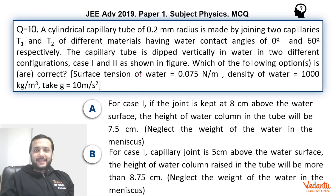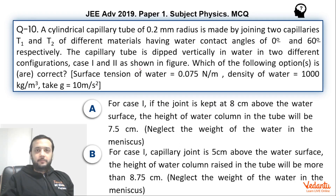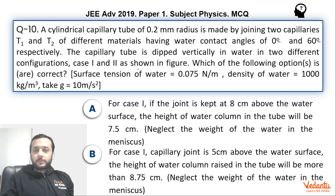Hi dear students, let's see this question that came in JEE Advanced, paper 1, 2019, physics. The question was from the topic of surface tension, multiple choice correct scheme. The question was not very difficult, but one of the options created a slight amount of ambiguity in students.